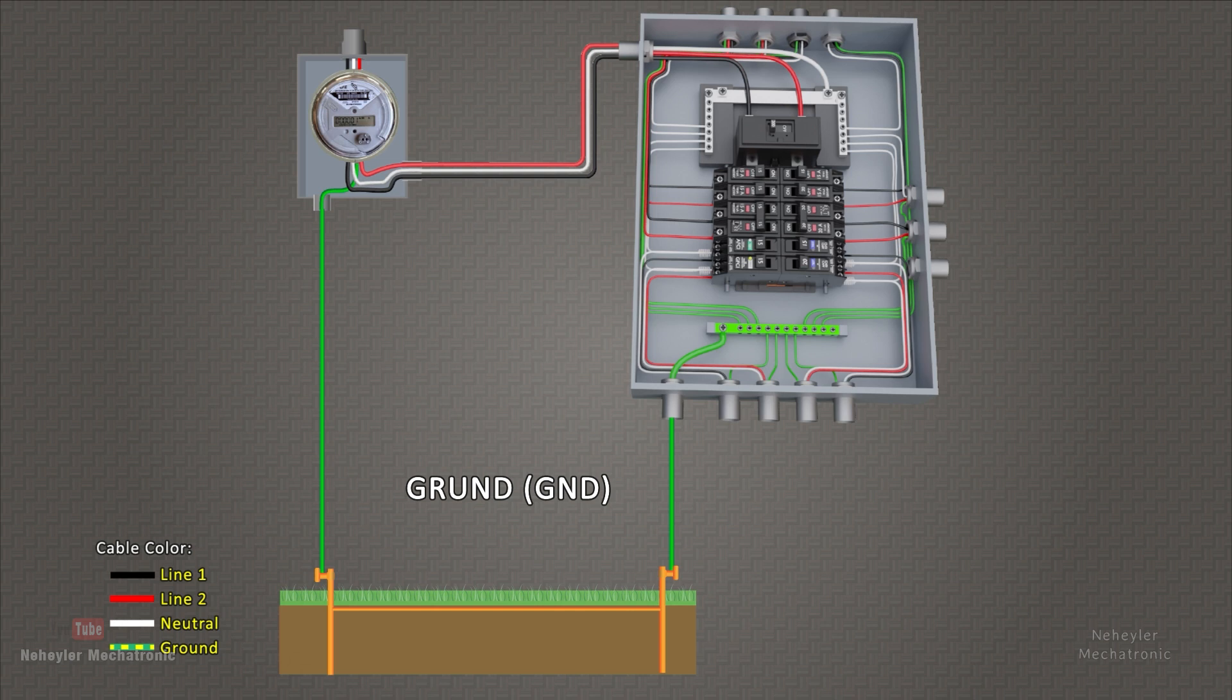When you finish wiring and on the lid of the load center box, a label must be included with the markings specifying which area of the house each breaker is for. Well mates, that's it for this video. I hope this magnificent information is useful to you. If you liked it, give it a thumbs up, subscribe and share this valuable information. See you soon!